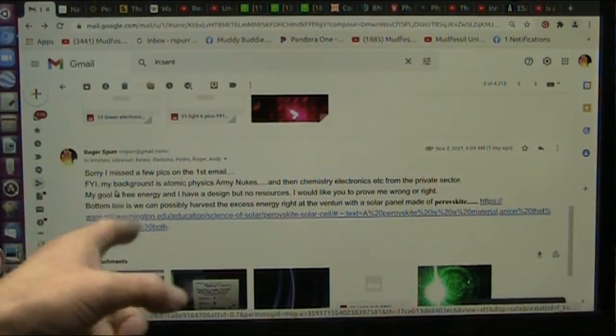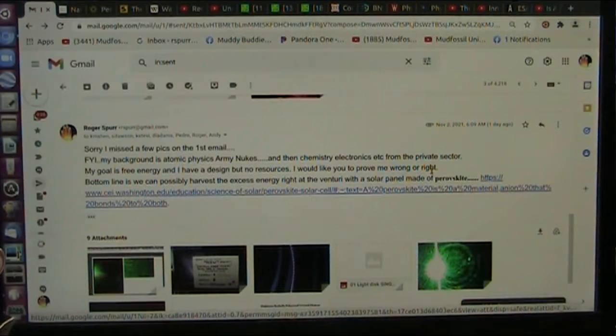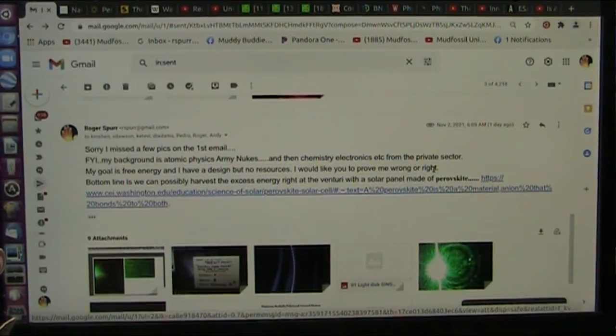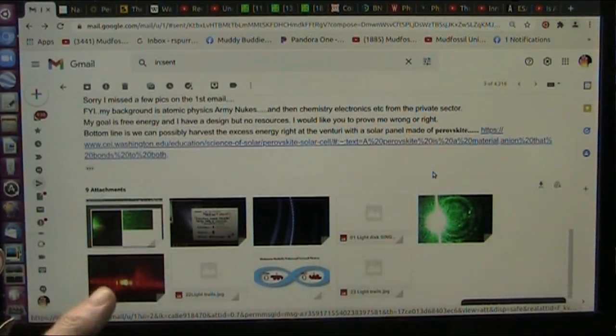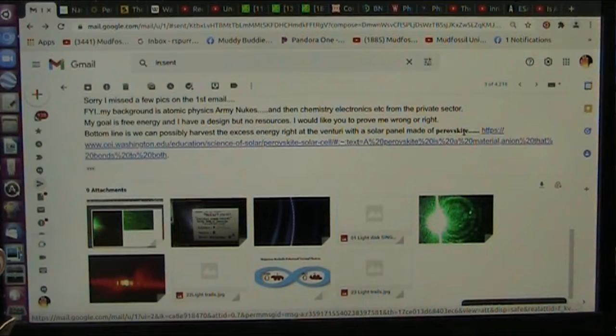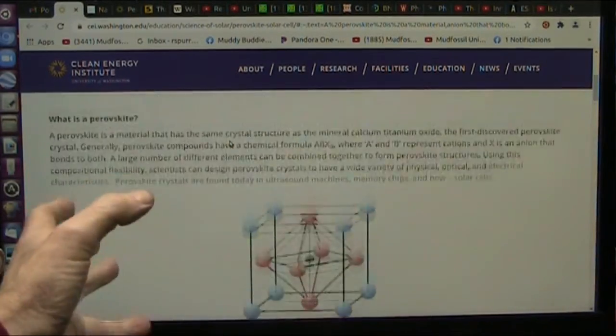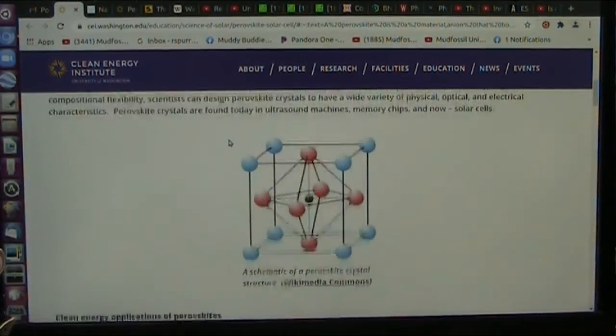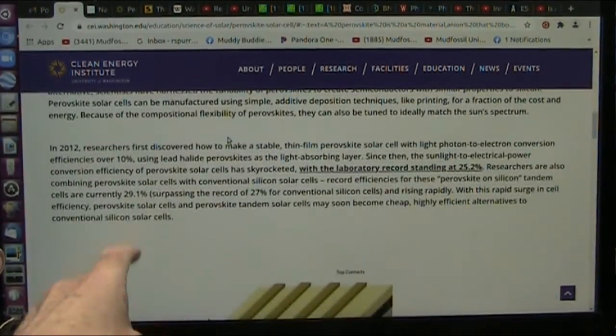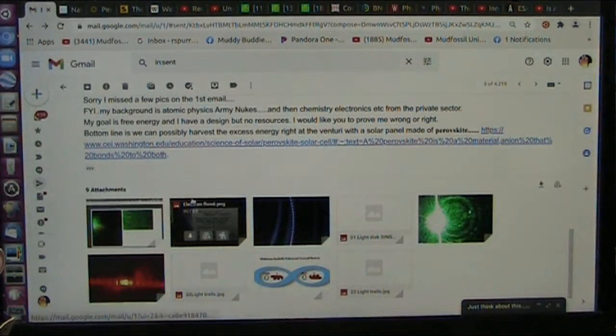I figured I'd give them my background just to be sure they understood. I do atomic physics. I was in the Army, nuclear things, and then at chemistry, electronics, in the private sector. Now, I want to get free energy. I have a design, but no resources. I'd like you to prove me wrong or right, one way or the other. These are the people that do this. This is Brookhaven. These are national, we pay for this. I want them to show me I'm wrong. If I'm right, it makes a hell of a big difference. The bottom line is we can possibly harvest excess energy right at the Venturi with a solar panel made of these perovskites. And I show what these new perovskite things are. They're new solar collector panels that are made of different types of metals, really. They're using calcium, titanium oxides and so forth and gallium and all that. But there is a, I think there's a whole different way of absorbing this energy where we can be extremely efficient.